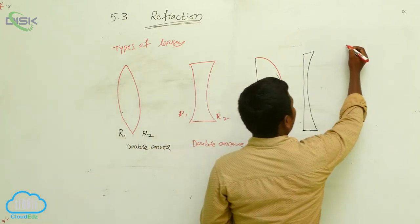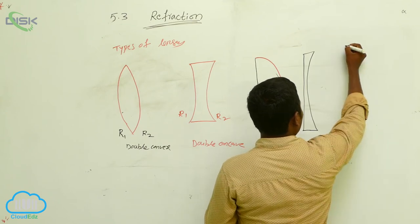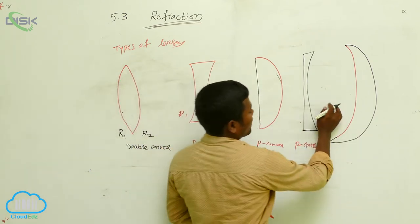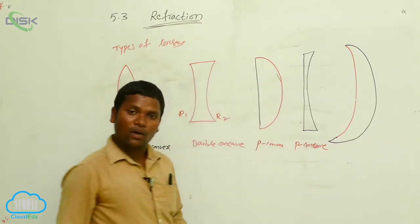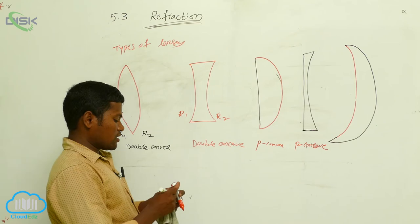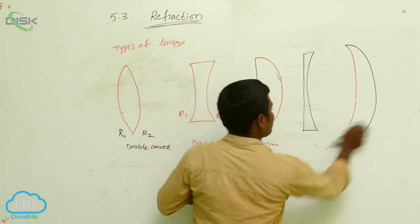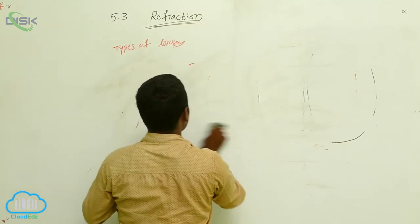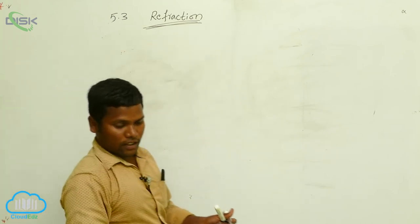Plano-convex may also be drawn like this. A lens means both sides should be transparent. If you consider this side, that is concave; if you consider this side, that is convex — so we call it concave-convex. There are many types of lenses, but in our syllabus most of the cases we are using the double convex or double concave.